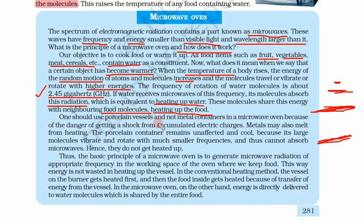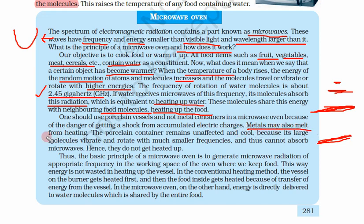One should use porcelain vessels, not metal containers, in a microwave oven. Why? Because of the danger of getting a shock from the accumulated electric charge — when electromagnetic waves hit metal, there is charge in motion on the metallic surface, causing charge build-up and risk of electric shock. Metals may also melt from heating.